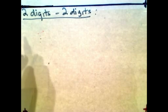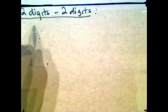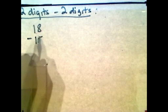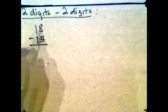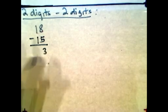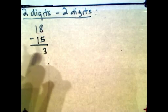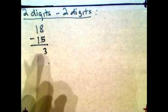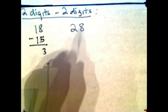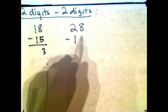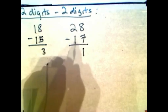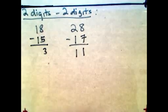Now let's try 2 digits minus 2 digits. Let's say you have 18 minus 15. 8 minus 5 gives you 3, and 1 minus 1 is 0 — I don't need to put the 0, since 03 really means 3. Try another one: 28 minus 17. 8 minus 7 is 1, and 2 minus 1 is 1. So that's 11.